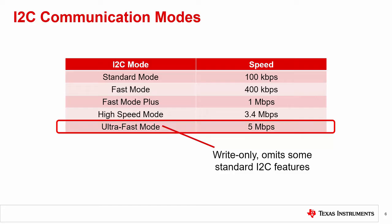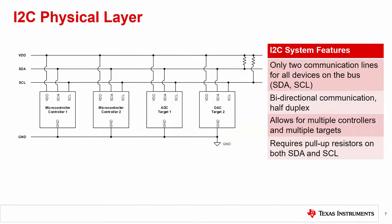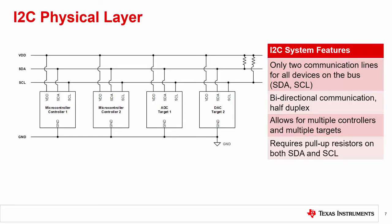Ultra fast mode is write only and omits some I2C features in the communication protocol. One of the reasons that I2C is a common protocol is because there are only two lines used for communications. The first line is SCL, which is a serial clock primarily controlled by the controller. SCL is used to synchronously clock data in and out of the target device. The second line is SDA, which is the serial data line. SDA is used to transmit data between the controller devices and target devices.